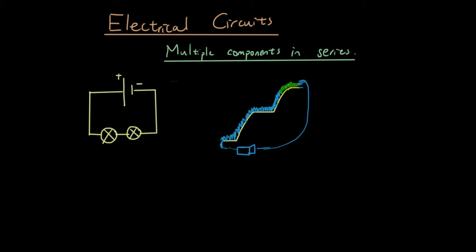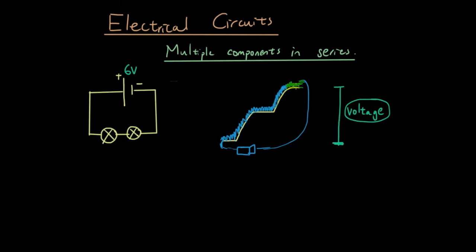So what about the voltage of the whole circuit? Let's say the battery is 6 volts. Remember how we said that the height of the hill is similar to the voltage, because at the top of the hill there is more potential energy compared to the bottom, and the voltage is the change in electrical potential energy. You can model that with water, because there is gravitational potential energy at the top, and it disappears as the water gets to the bottom.